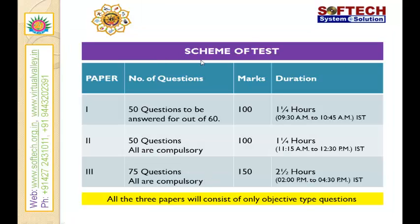Coming to the scheme of tests: the scheme includes three papers, and the total duration of the NET examination is from 9:30 AM to 4:30 PM. Paper 1 contains 60 questions, out of which 50 are to be answered, with a total mark of 100 — each question carries two marks. Paper 2 includes 50 questions, all compulsory, for 100 marks. Paper 3 consists of 75 questions, all compulsory, with total marks of 150. All papers are objective type questions only; no written answers or brief explanations are needed.